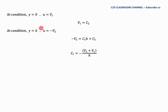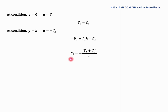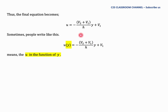Substituting boundary condition 1 (y = 0, u = v1) into u = C1·y + C2 gives v1 = C2. Substituting boundary condition 2 (y = h, u = −v2) gives −v2 = C1·h + C2, which simplifies to C1 = (−v2 + v1)/h. The final velocity profile equation becomes u = [(−v2 + v1)/h]·y + v1.